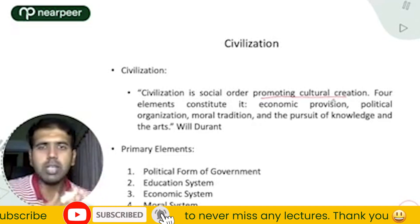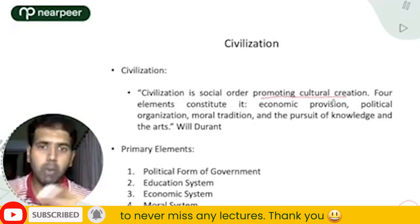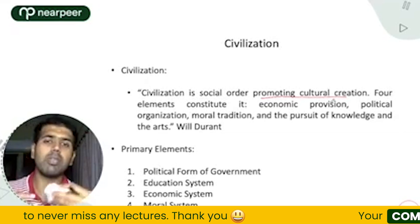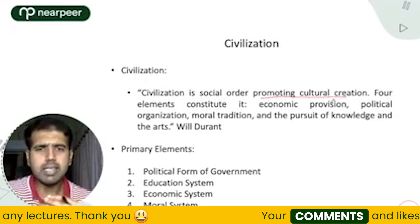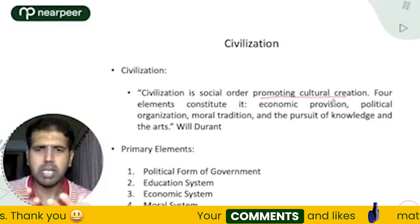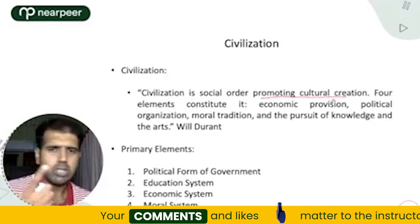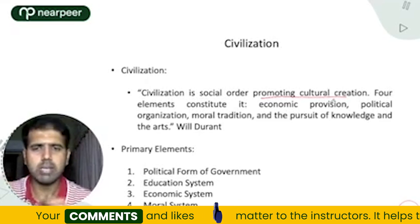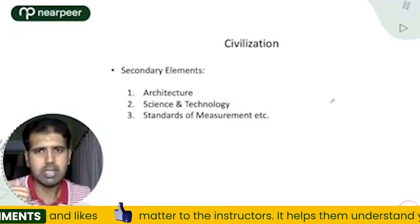Some elements relate to society, some to moral tradition and values, and some to the pursuit of knowledge and arts. If we look through this lens, there are four to five primary elements: political form of government, education system, economic system, moral system, and language and arts.